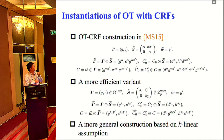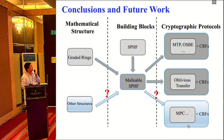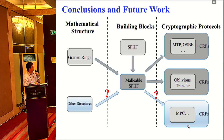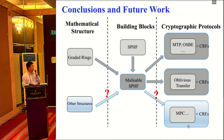That's the major part. To conclude: we show how to build the new notion called the malleable smooth projective hash from the graded ring and from the smooth projective hash. We ask whether there are other ways to construct it — one difficulty is, for example, for RSA, DCR, or QR-based structures, we cannot easily re-randomize the modulus. We also ask whether we can build other applications and the corresponding CRFs from this new notion. That's all for my presentation. Thank you.